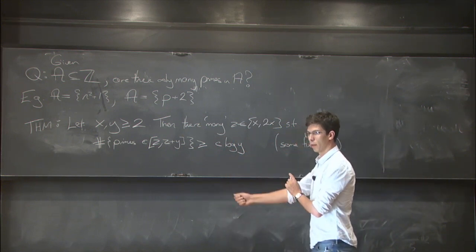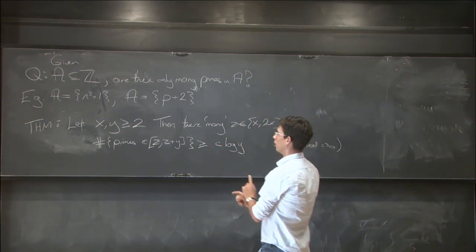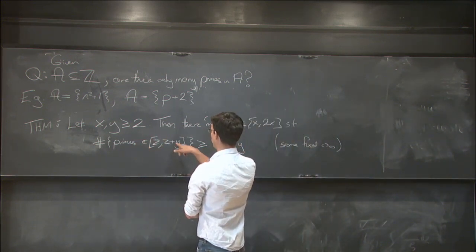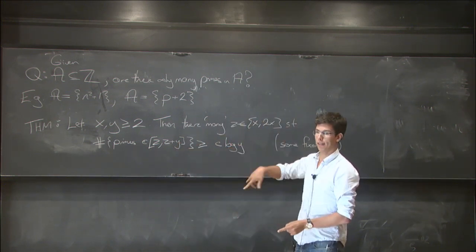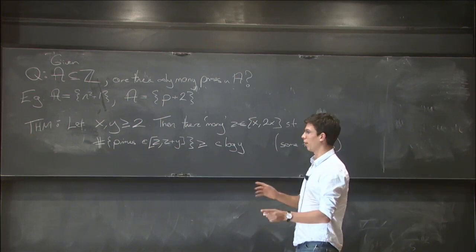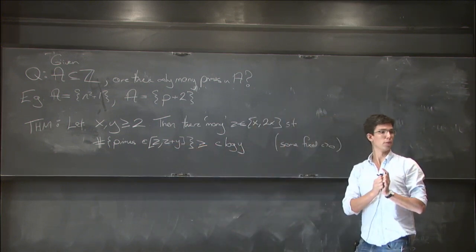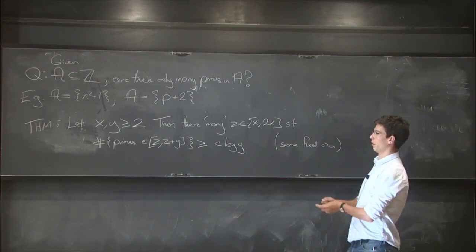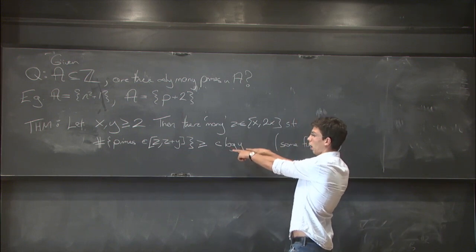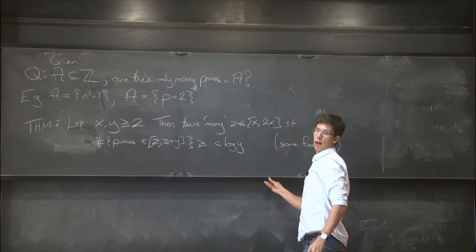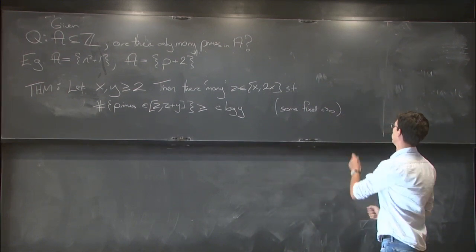But you can also do this with a bit of uniformity. There's also another trivial bound for the number of primes, which means that when this right hand side is less than or equal to y over log x, this is again trivial. So we're thinking of y as being moderately small, either a large constant or some quantity that's grown slowly with x. But this is showing that you can find intervals that contain unusually many primes, maybe more than you'd expect from average reasons.